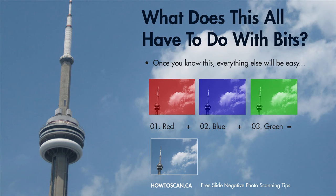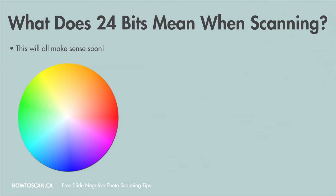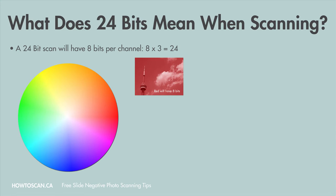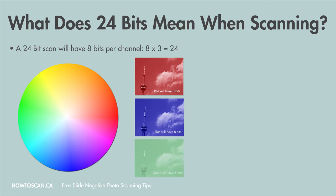What does this have to do with 24 or 48 bits when scanning? When you scan at 24 bits, you're telling your scanner to put in 8 bits of color per RGB channel. The red channel has 8 bits, the blue channel has 8 bits, and the green channel has 8 bits, for a total of 24 bits. When you use 48 bits, you're telling your scanner to put in 16 bits of color per channel — red gets 16 bits, blue gets 16 bits, and green gets 16 bits, for a total of 48 bits.